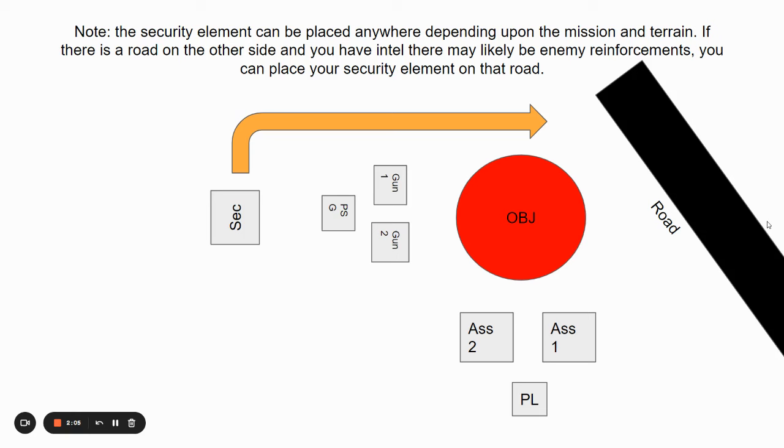One thing to note, the security element can be placed anywhere depending on the mission and terrain. It's all up to the PL. If there's a road on the other side and you have intel that there may be enemy reinforcements, you can place your security team on that road and split them up as alpha team and bravo team.